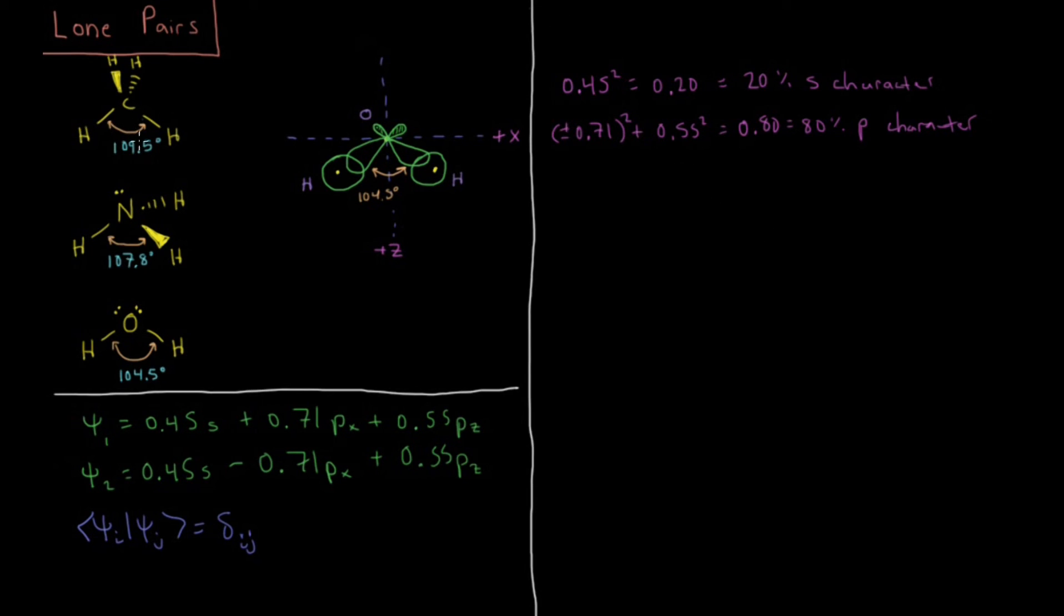So if we notice from an sp3 orbital, that was 25% s and 75% p, an sp2 was 33% s, 67% p. So this, as our bond angle is getting even smaller, is becoming an even higher fraction of p character.